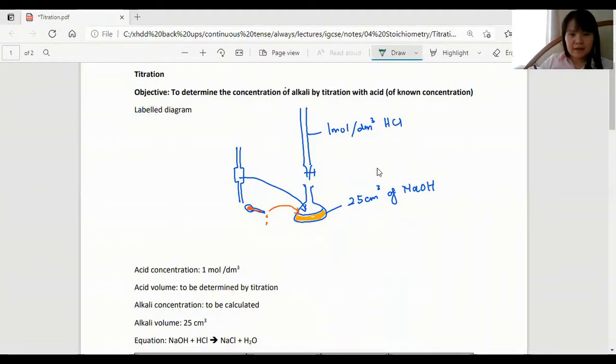Okay, let's say this is the titration that we did just now. So this is a burette, a pipette, and this is a 25 centimeter cubed pipette.